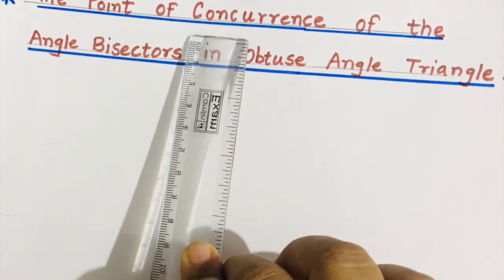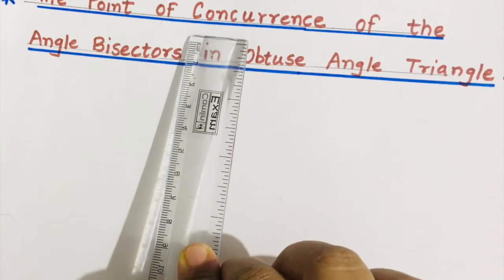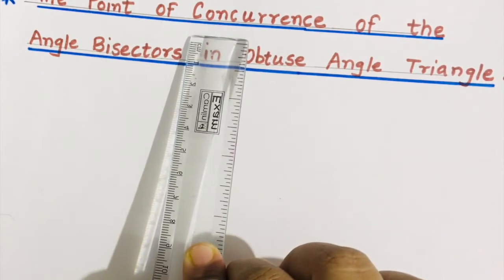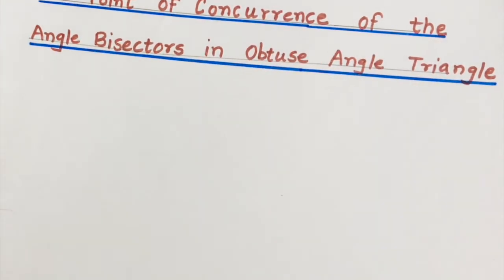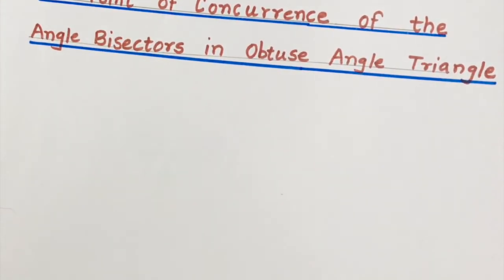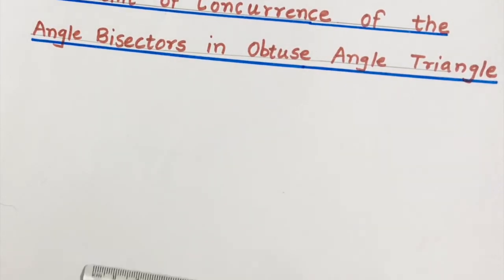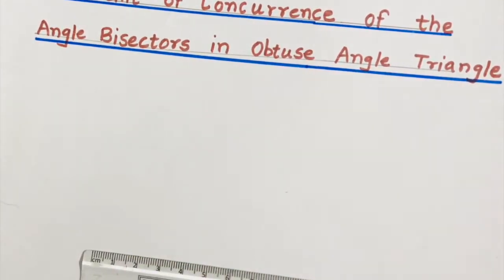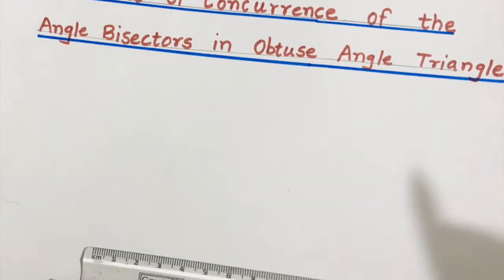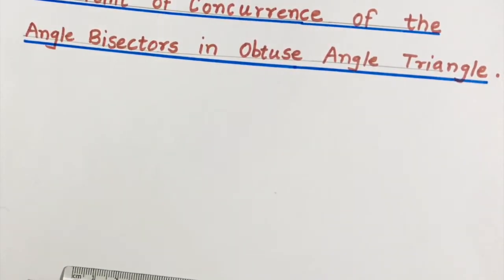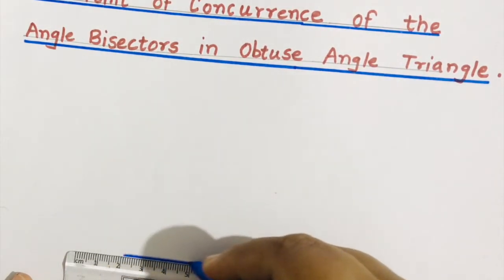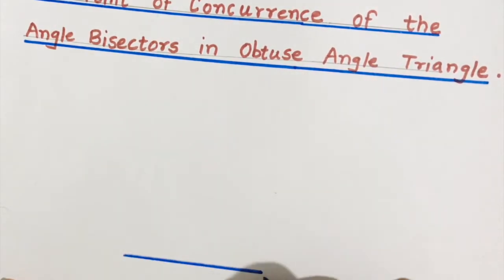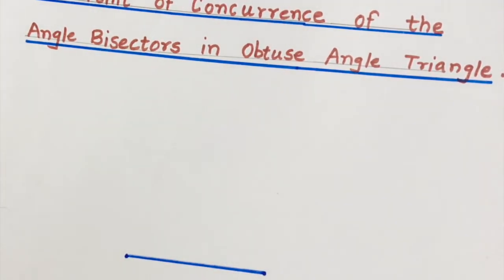Point of concurrence means where three lines meet at a point. That point is known as point of concurrence. So first of all we need to draw an obtuse angle triangle. Obtuse angle triangle means greater than 90 degrees and less than 180 degrees. So for the convenience I am taking 120 degrees.